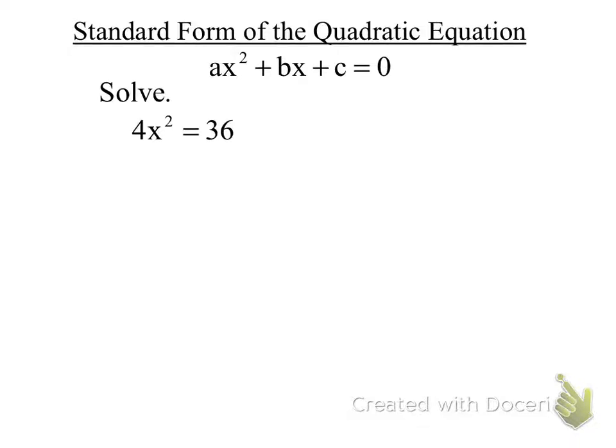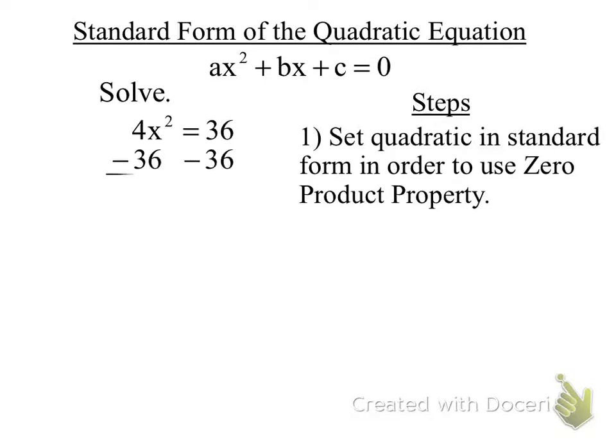So in this case, how might I get this to standard form? How might I get this to standard form? Somebody other than this front row. Jacob? Minus 36. Subtract 36 from both sides. Right? And then we set it equal to zero.